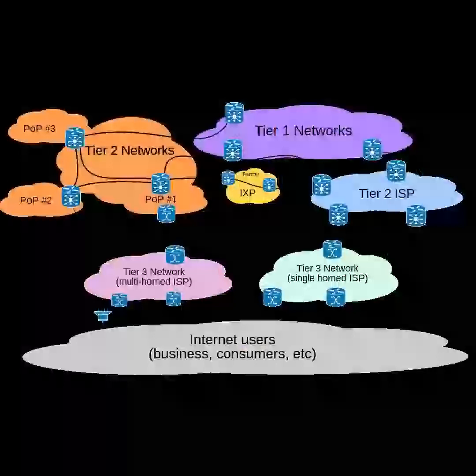The large amount of data gathered from packet-capturing requires surveillance software that filters and reports relevant information, such as the use of certain words or phrases, the access of certain types of websites, or communicating via email or chat with certain parties. Agencies such as the Information Awareness Office, NSA, GCHQ, and the FBI spend billions of dollars per year to develop, purchase, implement, and operate systems for interception and analysis of data.